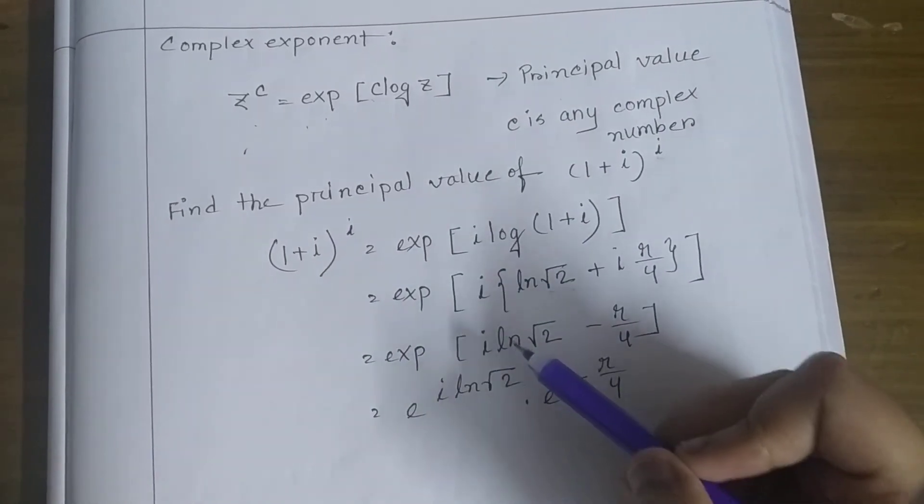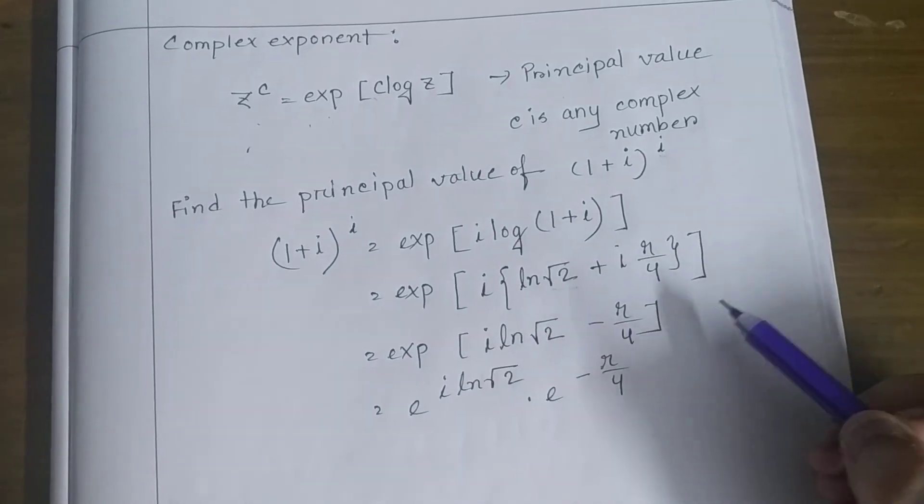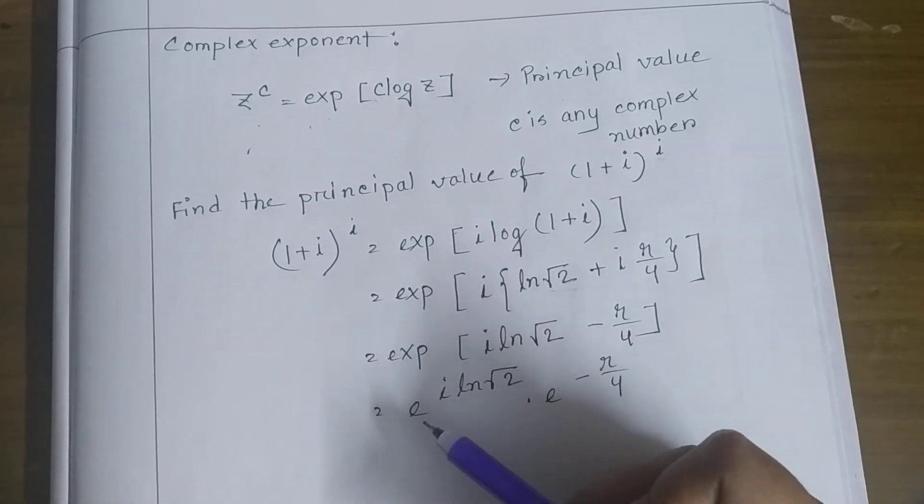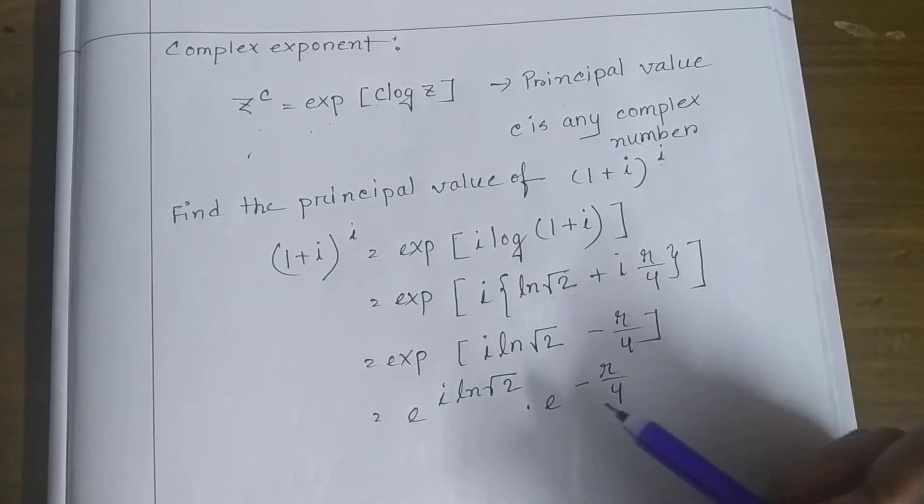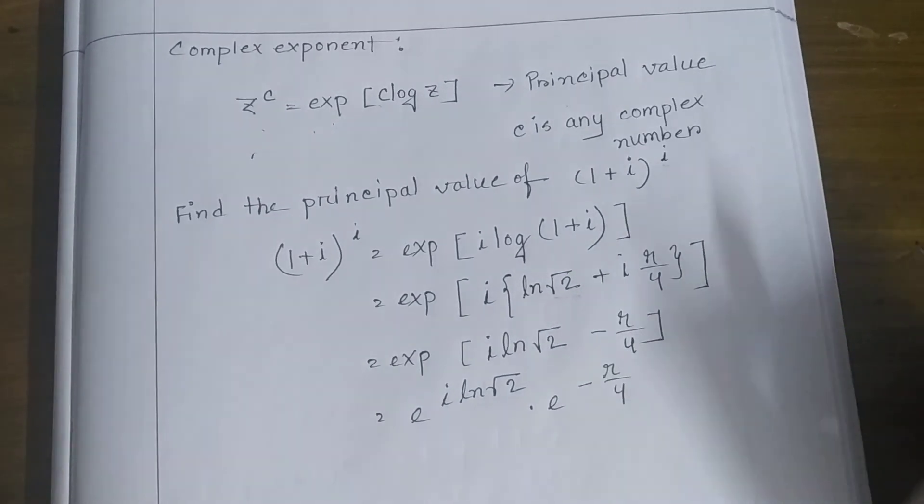Exponential of i ln root 2 minus pi by 4. So finally, we can write e to the power i ln root 2 times e to the power minus pi by 4. Thank you.